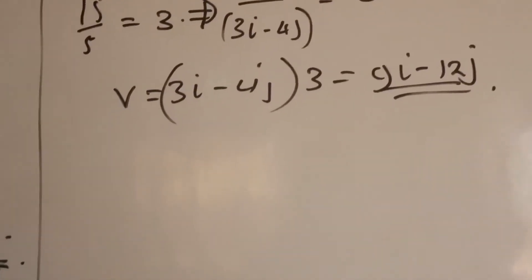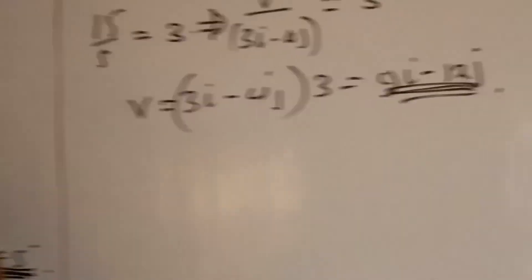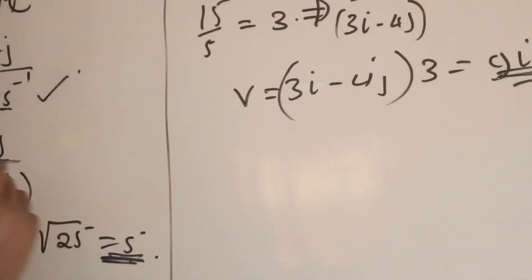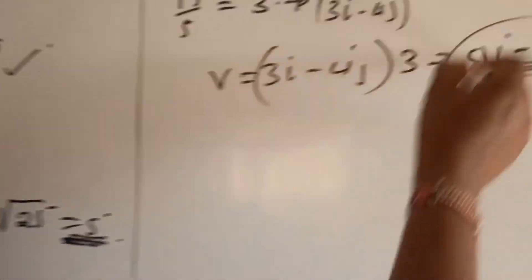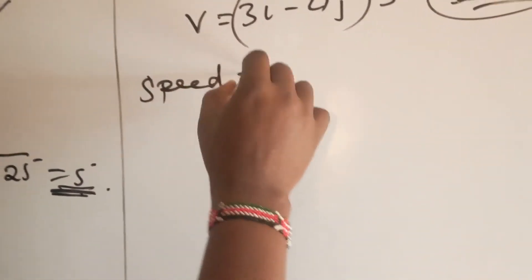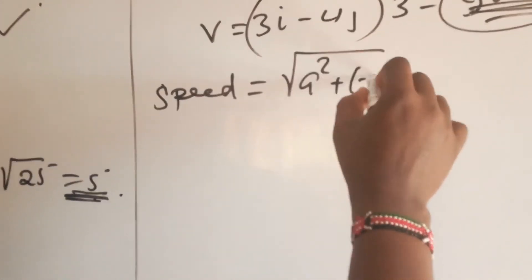That is now the vector which gives us 15 meters per second. And let's even derive, let's get the speed of this particular vector.